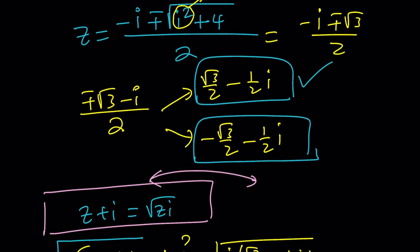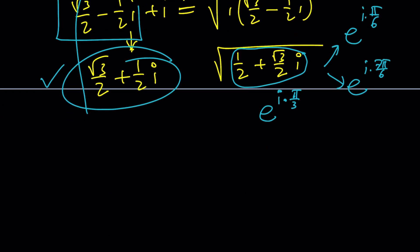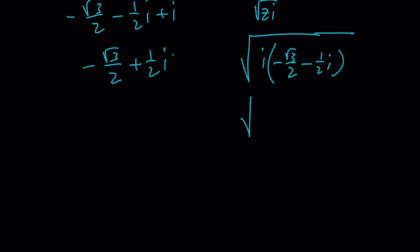What about the second one? We have negative root 3 over 2 minus 1 half i and I'm supposed to add i to it. Then on the other hand I need to evaluate square root of zi. This gives negative root 3 over 2 plus 1 half i, and the right side gives the square root of i times negative root 3 over 2 minus 1 half i.